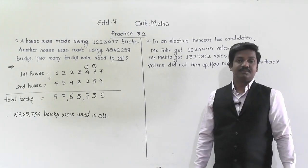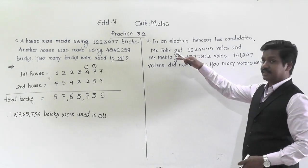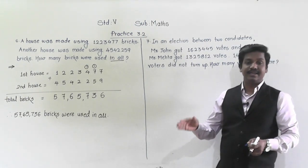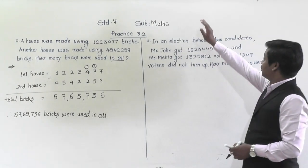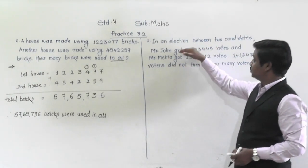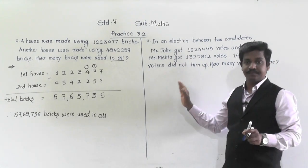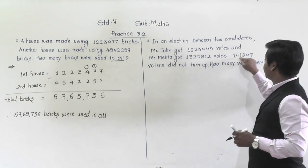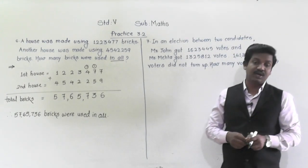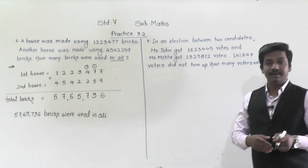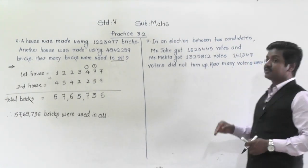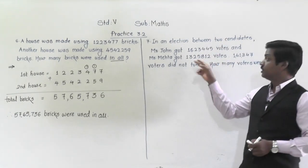How many voters were there in all? There is one constituency where an election was held — suppose for a Member of Parliament. There were two candidates, Mr. John and Mr. Mehta. Mr. John got this many votes, Mr. Mehta got this many votes, and 1,41,347 are the voters who did not turn up to cast their vote — they were unable to come for voting. So how many total voters were there?